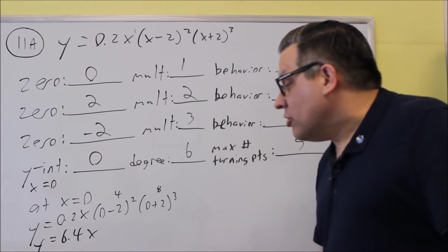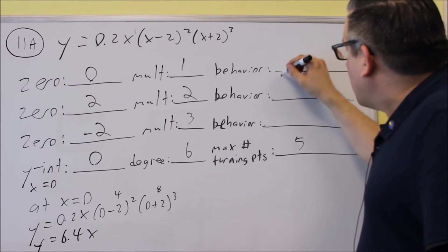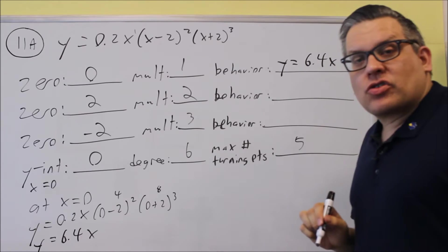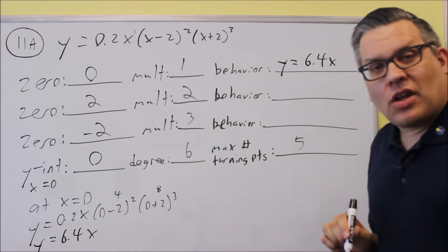The resulting thing that you get is you're going to get 6.4x when you multiply all that together. Four, eight, and 0.2, you get 6.4x. So therefore, that's what your behavior's going to look like when it crosses the x-axis at zero.